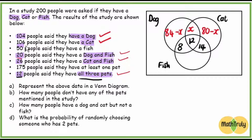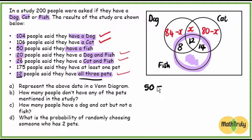The last full circle: 50 people have a fish — the entire fish circle. To find fish only, we take 50 minus 8 minus 12 minus 14, and that gives us 16. So 16 people have a fish only.